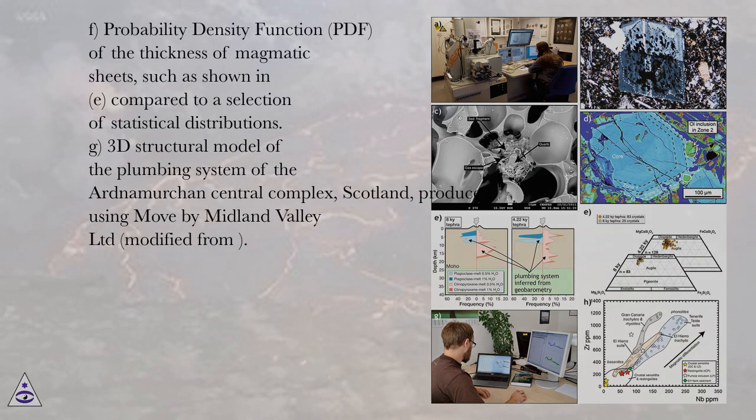(F) Probability density function (PDF) of the thickness of magnetic sheets, such as shown in E, compared to a selection of statistical distributions. (G) 3D structural model of the plumbing system of the Ardnamurchan Central Complex, Scotland, produced using Move by Midland Valley Ltd.